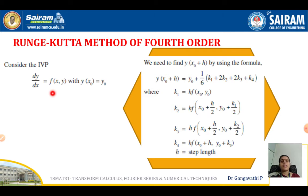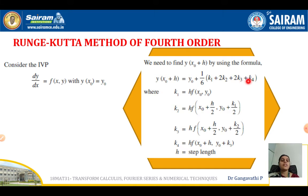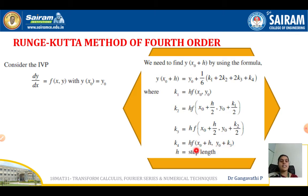For this type of problems, we are going to use the Runge-Kutta method. The formula is: y(x₀ + h) = y₀ + (1/6)(k₁ + 2k₂ + 2k₃ + k₄). The constants are: k₁ = h·f(x₀, y₀), k₂ = h·f(x₀ + h/2, y₀ + k₁/2), k₃ = h·f(x₀ + h/2, y₀ + k₂/2), and k₄ = h·f(x₀ + h, y₀ + k₃), where h is the step length.